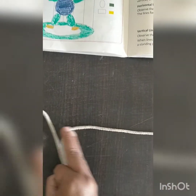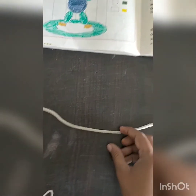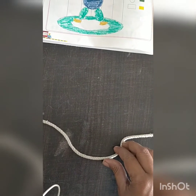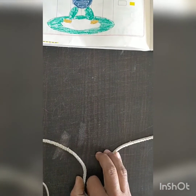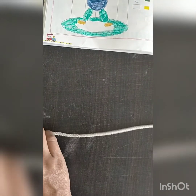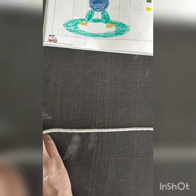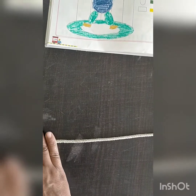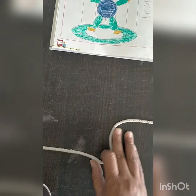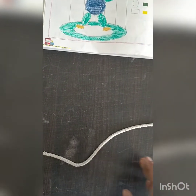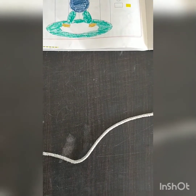Straight line. Curved line. Then straight line. Curved line. So students, straight line क्या होती है? Straight होती है — बिल्कुल भी मुड़ती नहीं है. और curve line क्या होती है? मुड़ती है — यह हमेशा आपको ध्यान में रखना है.